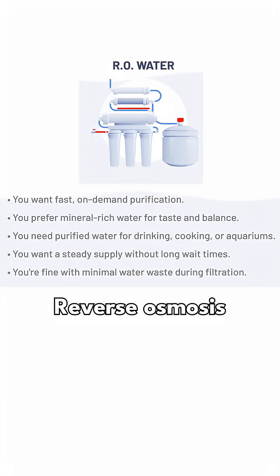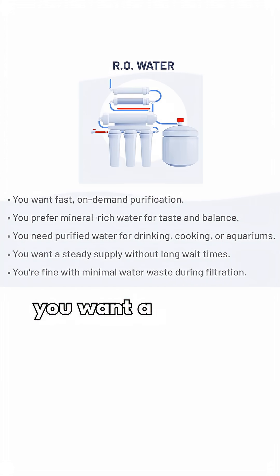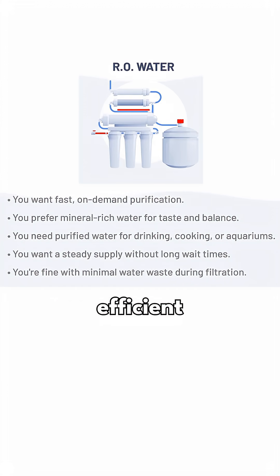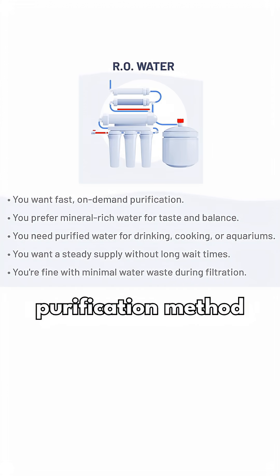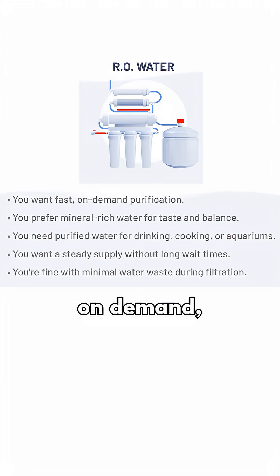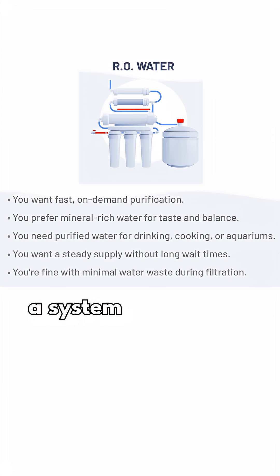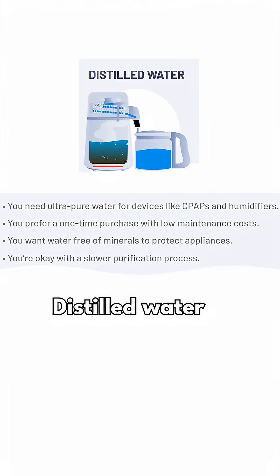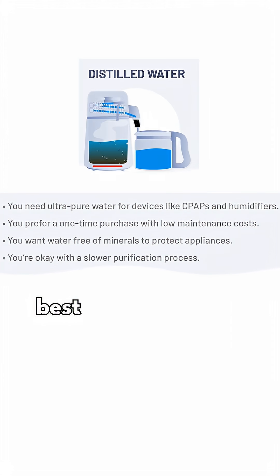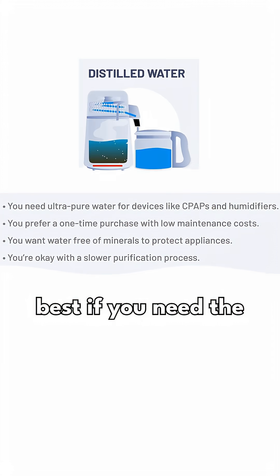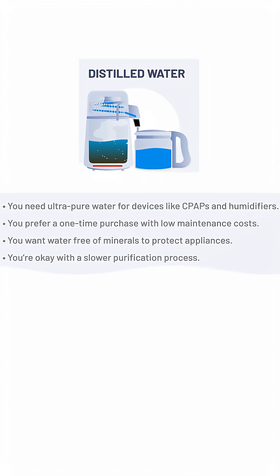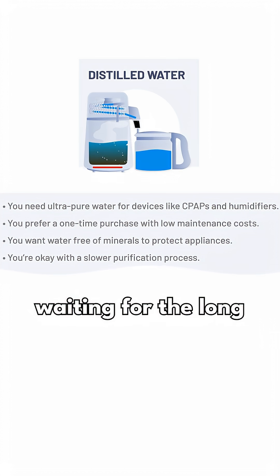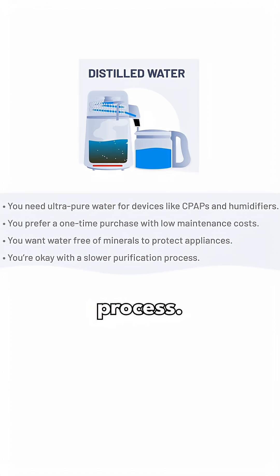Reverse osmosis water is best if you want a fast and efficient purification method that works on demand and you're okay with a system that wastes a small amount of water during filtration. Distilled water is best if you need the purest water possible and you don't mind waiting for the long purification process.